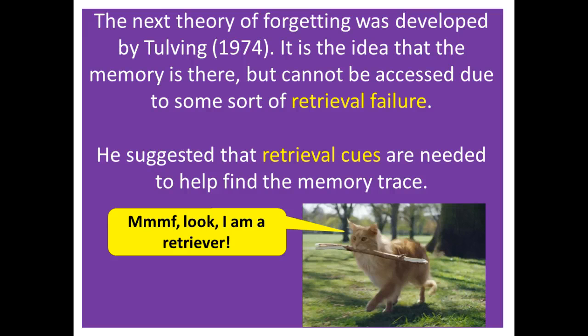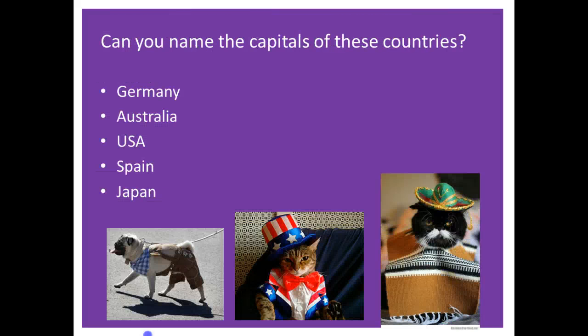The other theory came from Tulving in 1974. It's the idea that the memory is there but you can't get to it. He said that information about our surroundings and emotions are encoded with every memory. For example, if you proposed to your partner while a certain song was playing, just hearing that song will bring back details of the proposal and make you relive those — hopefully positive — emotions. Let's have a look at how helpful retrieval cues can be.